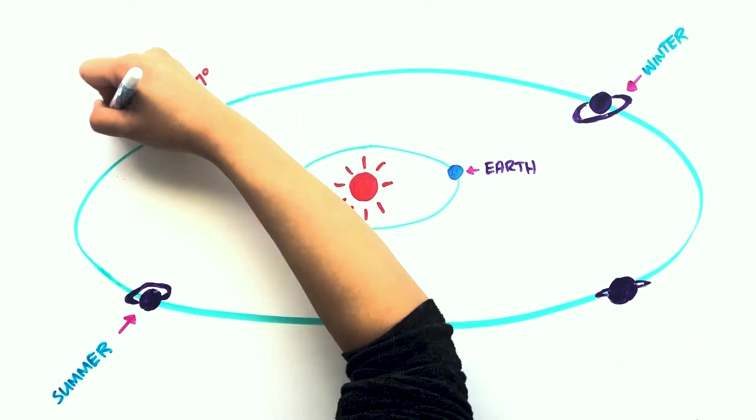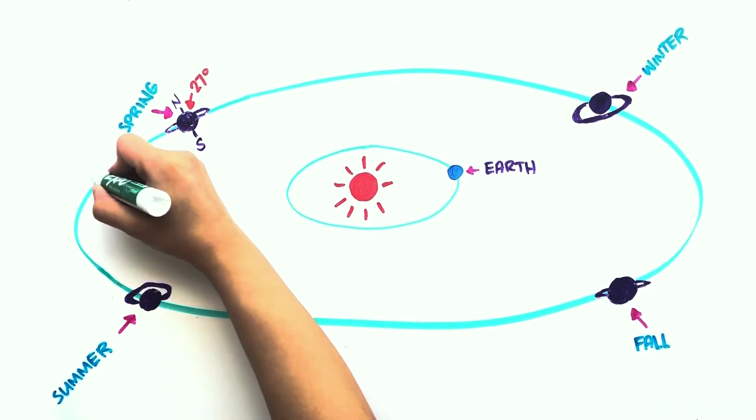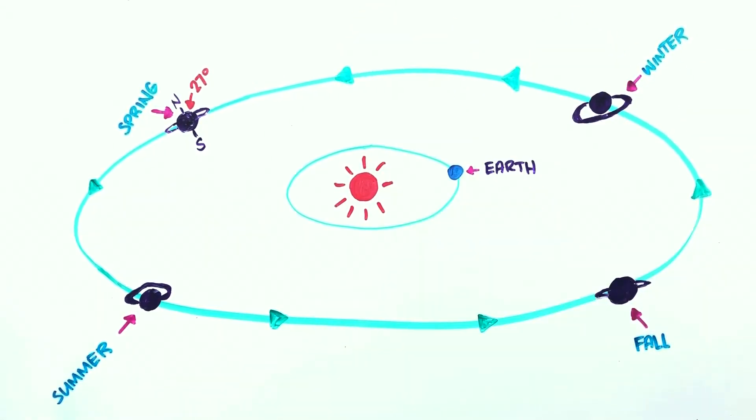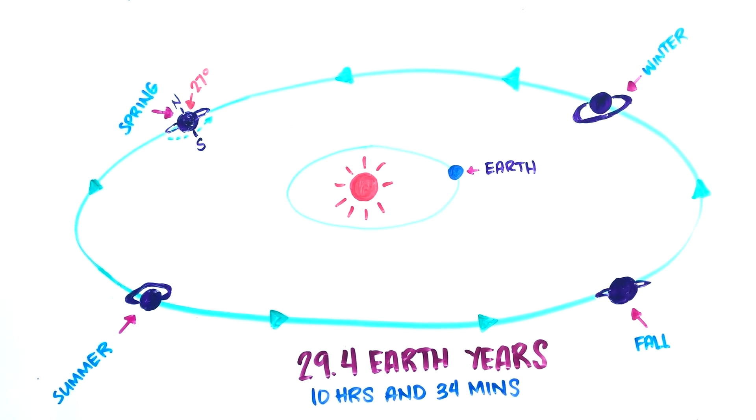It orbits the Sun every 29.4 Earth years and also rotates on its axis very fast. A day on Saturn lasts only 10 hours and 34 minutes.